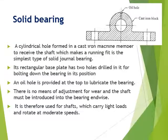A solid bearing is a simple type of journal bearing, inserted to support rotating shafts. It has an oil hole for lubrication and a drilled hole for fixing it to the frame or foundation. It does not have any adjustment for wear and tear, so once worn out, it must be replaced entirely with a new bearing.